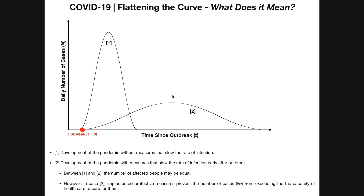So what does each curve represent? Curve number one, the sharper or steeper curve, is what we would see in a pandemic in a particular area if it developed without measures that slow the rate of infection. If we don't do anything to slow it, we'd get a curve that looks like this. Curve number two, which is much shallower with a much lower peak, represents the case where the pandemic developed with measures that slow the rate of infection — but those measures would have to be implemented early in the outbreak. So number one is without measures to slow it, and number two is with measures to slow it.